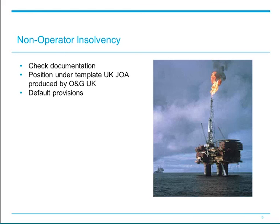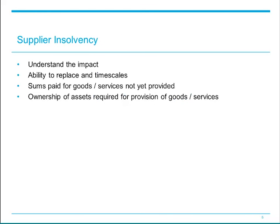JOAs normally provide for default rights to be exercisable on payment or similar defaults rather than specifically on insolvency events — we'll discuss these rights in the next webinar in the series next Wednesday. Looking briefly at the insolvency of a supplier, the insolvency of a supplier can have significant impact in a number of ways, including issues caused by an inability to replace the supplier at short notice, a loss of sums paid to the supplier for goods or services not yet provided, and challenges caused by the fact that the supplier's ownership of assets that are required for the provision of the goods or services in question, including in some cases intellectual property rights. In each case, the relevant contract would require to be examined and the type of analysis we spoke about before carried out.